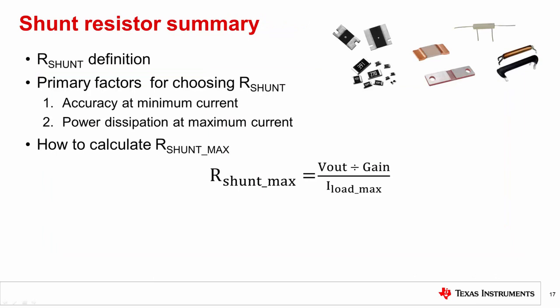In summary, in this video, we defined the shunt resistor and defined the trade-offs between minimum current accuracy and power dissipation at maximum current. We then discussed how to calculate the maximum value of the shunt resistor for an application. Finally, we briefly touched upon the shunt resistor tolerance error and its effect on system accuracy.